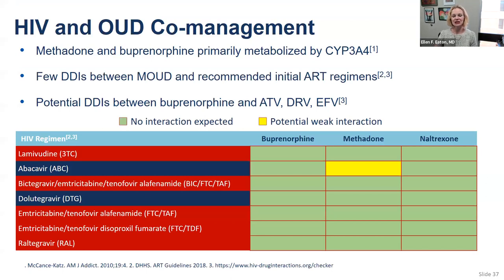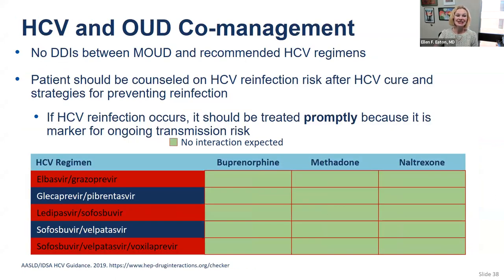HIV and opioid use disorder co-management: methadone and buprenorphine are opioid agonists metabolized by the CYP3A4 enzyme. There are a few drug-drug interactions between them and ART — potential interactions between buprenorphine and atazanavir, efavirenz, and darunavir — but no significant interactions between buprenorphine and the first-line antiretroviral therapies, which is really important. There is a potential weak interaction between methadone and abacavir that may be relevant for some patients, but for buprenorphine that is not a significant drug-drug interaction.